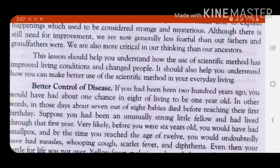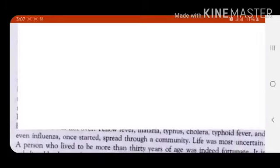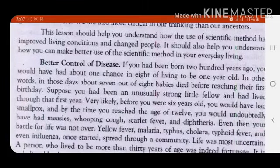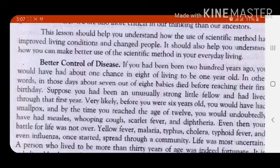Better control of disease — look at the title: better control of disease. It means what changes have taken place in our health maintenance conditions. The writer says, if you had been born just 200 years ago, you would have had about one chance in eight of living to be one year old. It means that only about one out of eight children could survive.